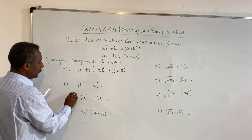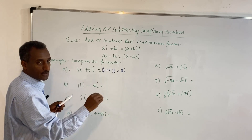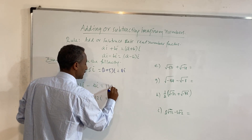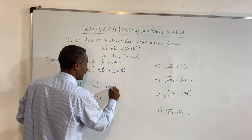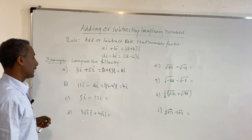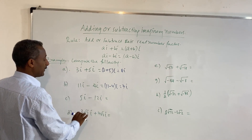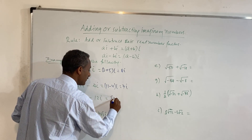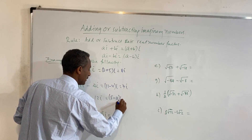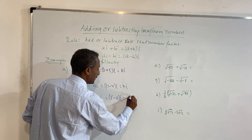11i minus 4i is equal to 11 minus 4, which is 7i. Next, 5i minus 12i is equal to 5 minus 12, times i, which is negative 7i.